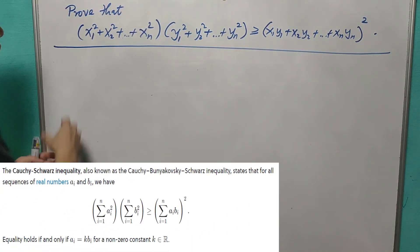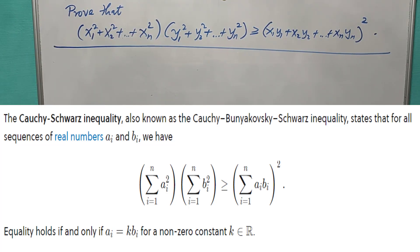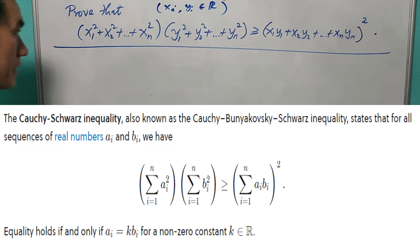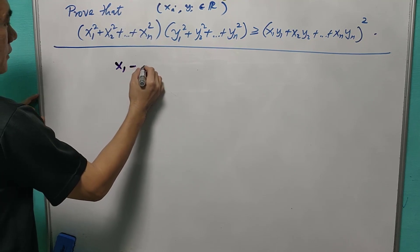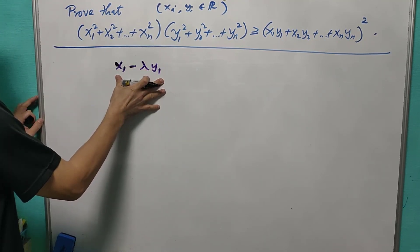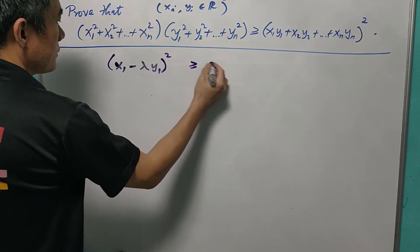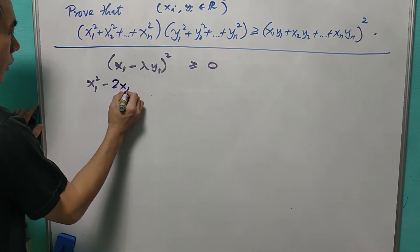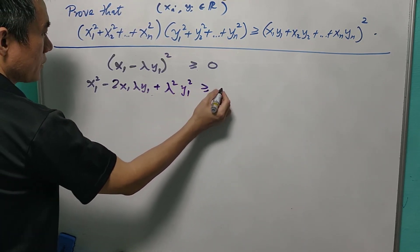For those who have learned Cauchy's inequality, you must be very familiar with this, because our task today is to prove it. This inequality requires that all xi and yi are real numbers. So for any real numbers, we know that x1 minus lambda·y1 is also a real number. When we square it, this will be greater than or equal to zero, meaning x1² − 2x1·λy1 + λ²y1² ≥ 0.